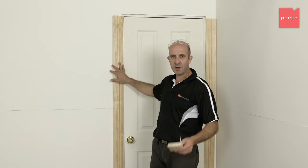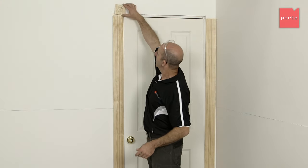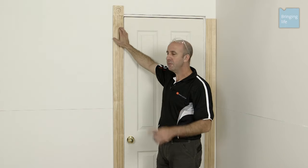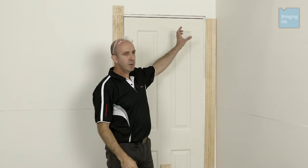So I've got the first architrave on. The next thing is to put the block up the top, just to make sure it's flush on the inside. You can fire that off, then put the headpiece on, then the other block, and finish off with the last architrave.